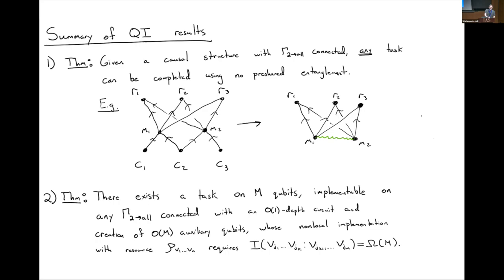Q&A: Does the converse hold? No, there are counterexamples. One questioner suggests it's more like entanglement emerges from causality — the speaker clarifies: if I have a certain causal structure, I know I need to have entanglement. There are certain kinds of causal structures that must be emergent from entanglement, but it's not saying that any kind of entanglement can give you a causal structure.